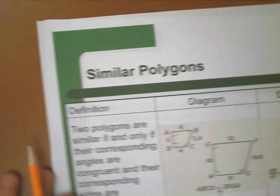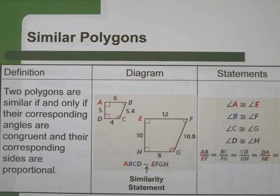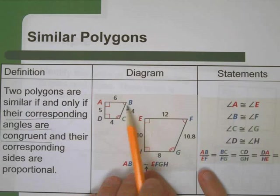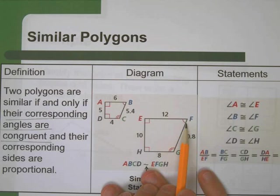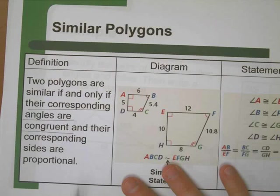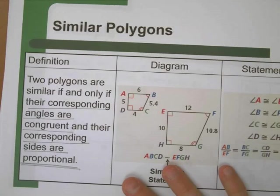Let's define what similar polygons are first. Two polygons are similar if and only if these requirements are met. Number one, first requirement, the corresponding angles have to be congruent. So, in this shape, what we're going to say is these two are congruent if the first requirement is A and E are the same, B and F are the same, C and G are the same, D and H are the same. All four angles are congruent. Their corresponding angles are congruent. There's the first requirement.